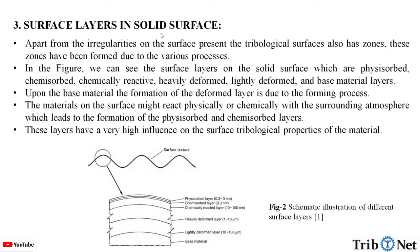What are the surface layers in the solid surface? Apart from the irregularities on the surface, tribological surfaces also have zones, which have been formed due to various processes. In the figure, we can see the surface layers on the solid surface, which are physisorbed, chemisorbed, chemically reactive, heavily deformed, lightly deformed, and base material layers.